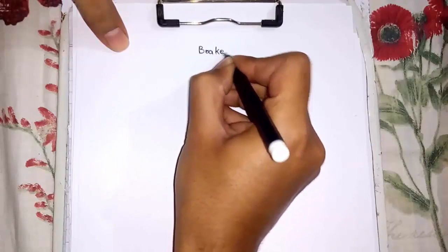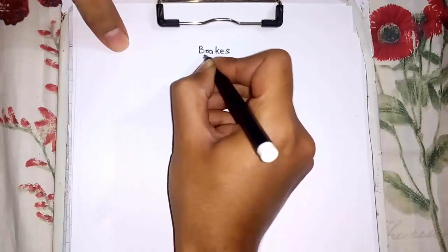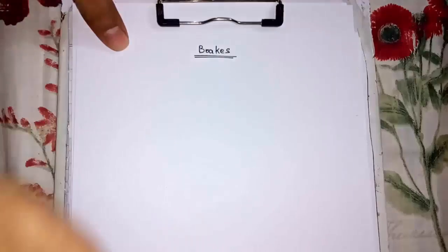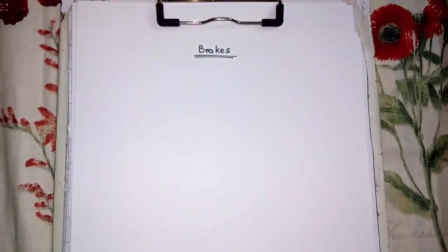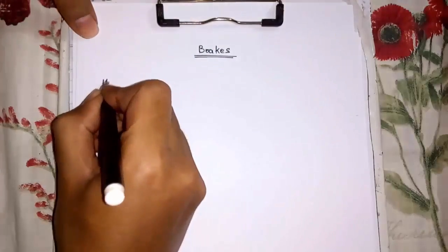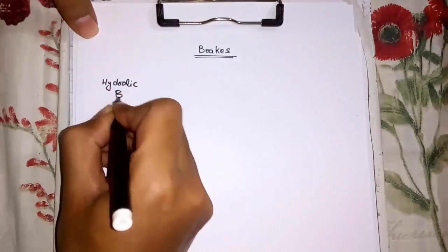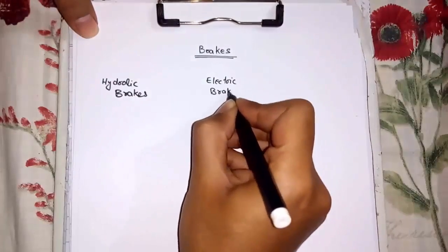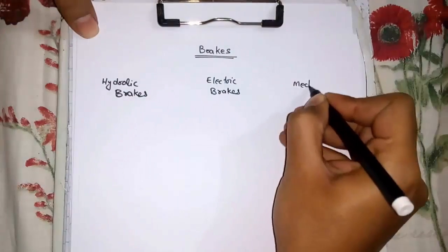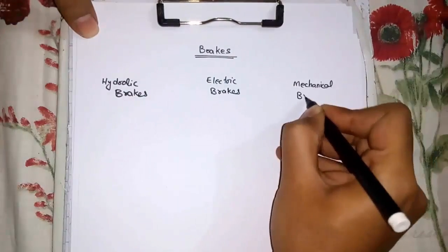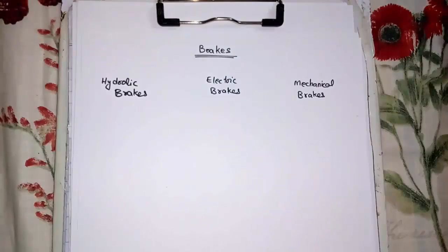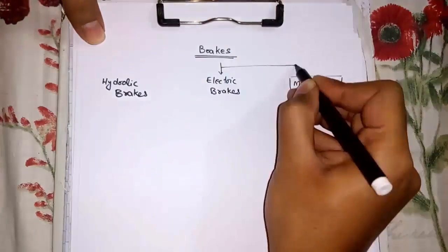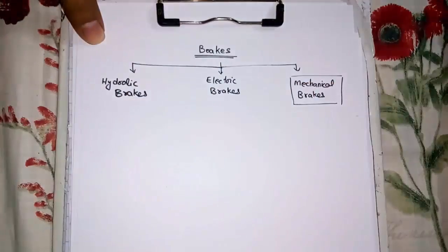Today we will learn about brakes, specially about shoe brakes. Brakes are of different types: Hydraulic Brakes, Electric Brakes and Mechanical Brakes.